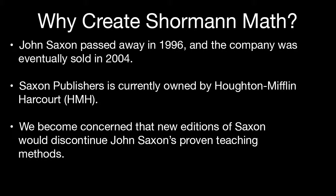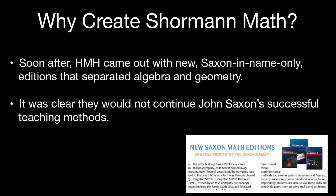John Saxon had passed away in 1996 — the same year we started teaching math and science co-op style classes for homeschool students. The company was eventually sold in 2004, and Saxon Publishers is currently owned by Houghton Mifflin Harcourt, a large textbook provider for public schools. When that sale happened, we became concerned that new editions of Saxon would discontinue John Saxon's proven teaching methods and instead focus on teaching to public school standards in order to sell more books.